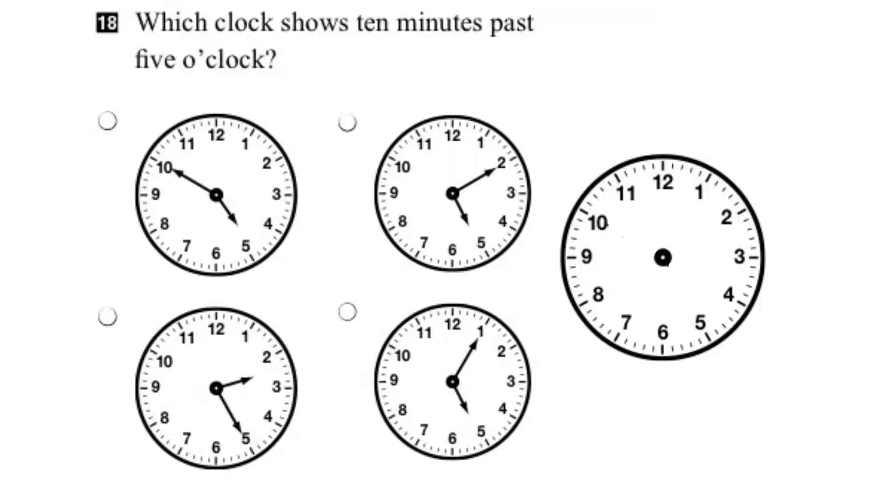Well, if we start at 12, each of these little ticks represents 1 minute. So to go from 12 to 1 is 5 minutes. So the 1 is actually 5 minutes past 12. And if we kept going after the 1, that's 5 more minutes. So the 2 represents 10 minutes past 12.